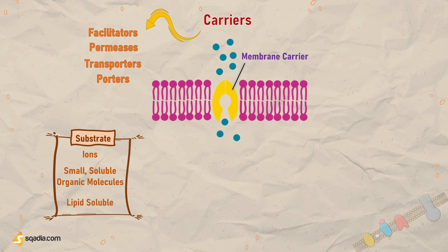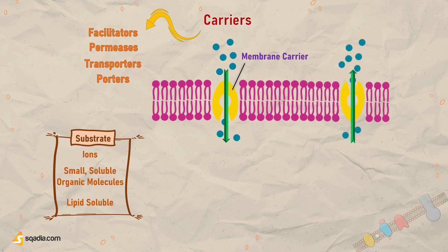Some carriers transport substrates in a passive manner, down concentration gradients — solutes move from a region of higher concentration to one of lower concentration. But other carriers use transmembrane ion gradients created by pumps to transport across a membrane up a concentration gradient, or the translocation of an ion down its concentration gradient can drive another ion or solute up a concentration gradient. These are called secondary transporters.